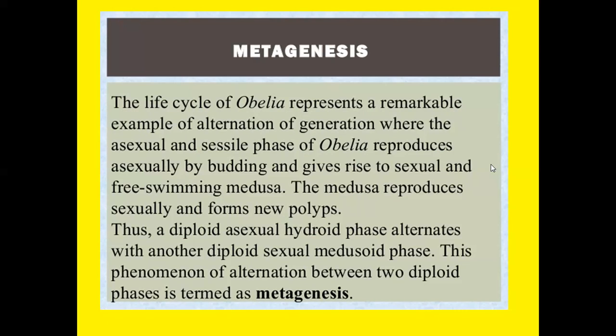Metagenesis: the life cycle of Obelia represents a remarkable example of alternation of generations. The asexual polypoid phase reproduces asexually by budding and gives rise to the sexual, free-swimming medusae. The medusae reproduce sexually and form new polyps. Thus a diploid asexual hydroid phase alternates with another diploid sexual medusoid phase. This phenomenon of alternation between two diploid phases is termed metagenesis.